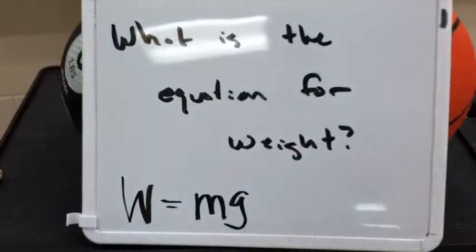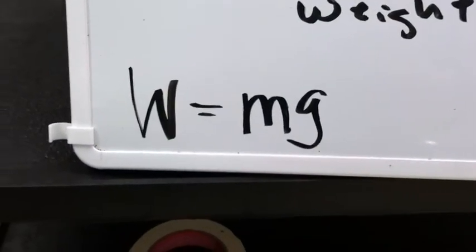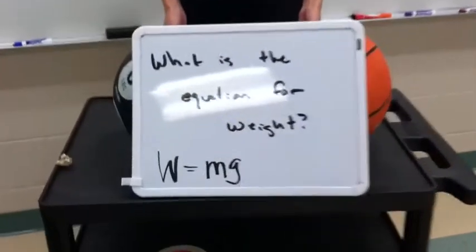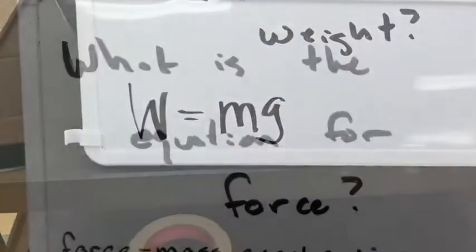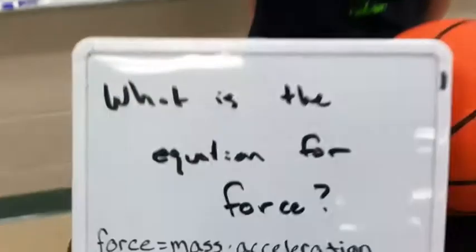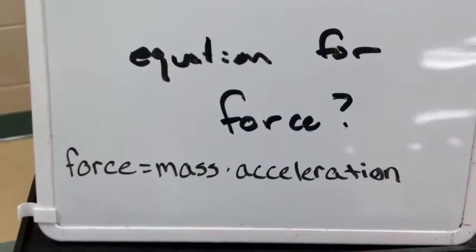What is the equation for weight? Weight, described as W, is the product of the mass of an object, or M, and the magnitude of the local gravitational acceleration, or G, thus giving us W equals M times G. What is the equation for force? Force equals mass times acceleration.